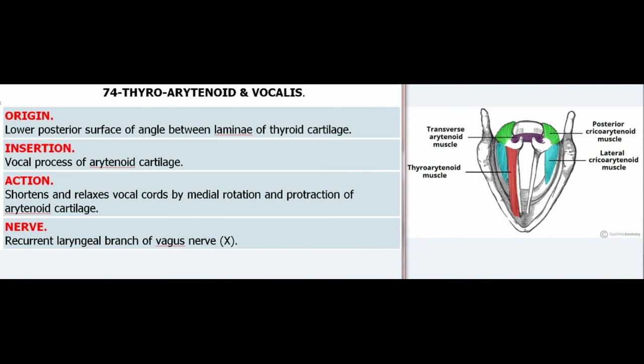74. Thyroarytenoid and Vocalis. Origin: Lower posterior surface of angle between laminae of thyroid cartilage. Insertion: Vocal process of arytenoid cartilage. Action: Shortens and relaxes vocal cords by medial rotation and protraction of arytenoid cartilage. Nerve: Recurrent laryngeal branch of vagus nerve (X).